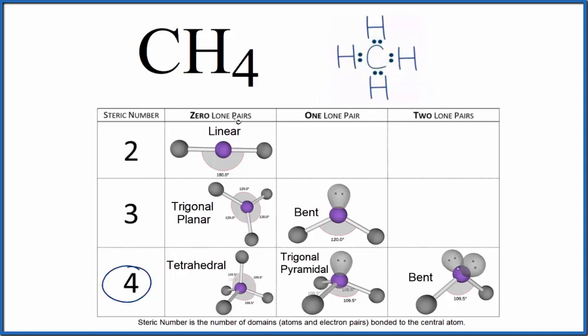And we don't have any lone pairs. These pairs of electrons here are actually involved in a chemical bond with the hydrogen, so we don't have any lone pairs, zero lone pairs. So we go down and then over and we have a tetrahedral molecular geometry. The bond angle for CH4 is going to be 109.5.